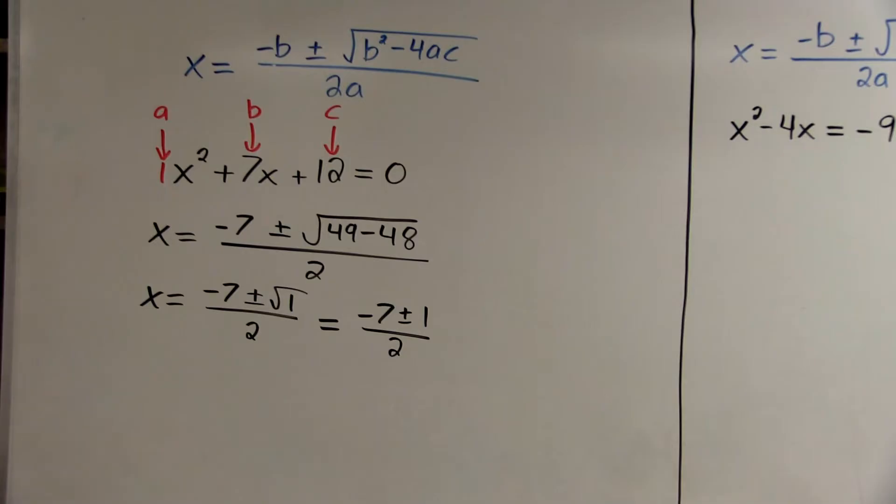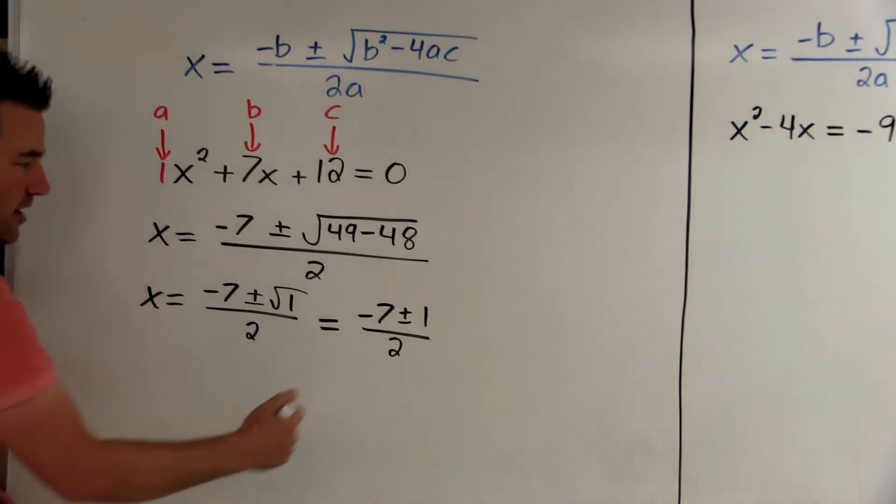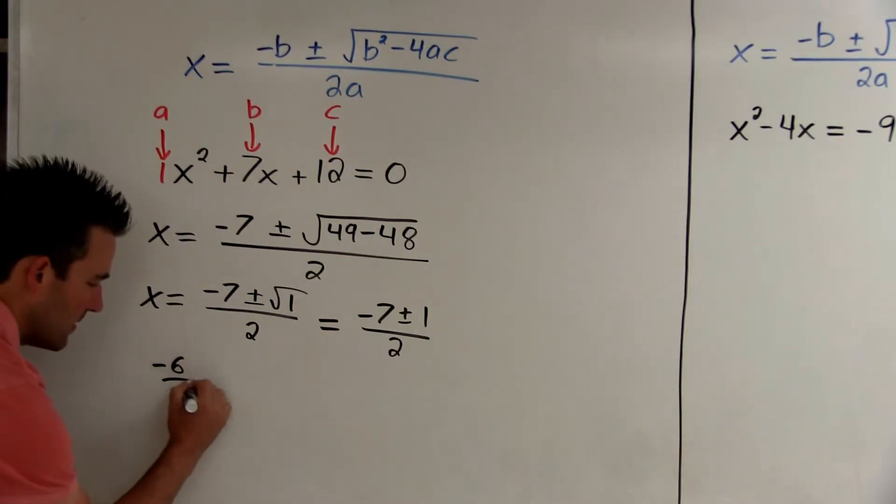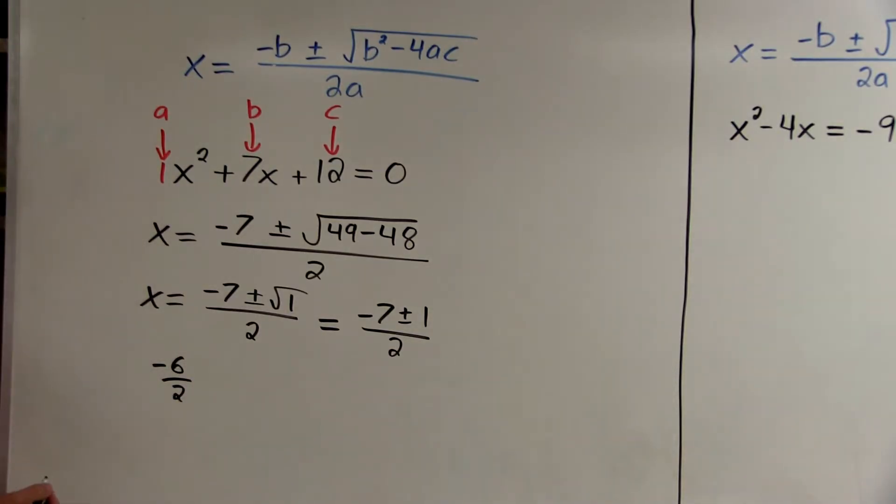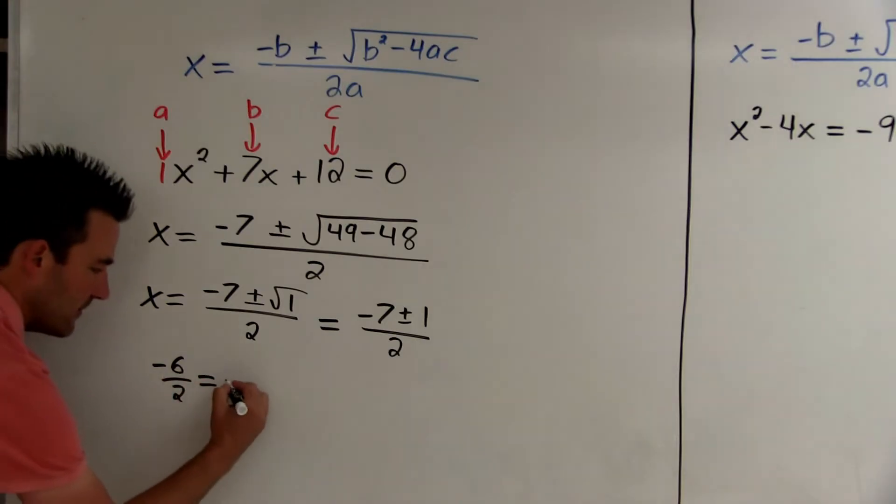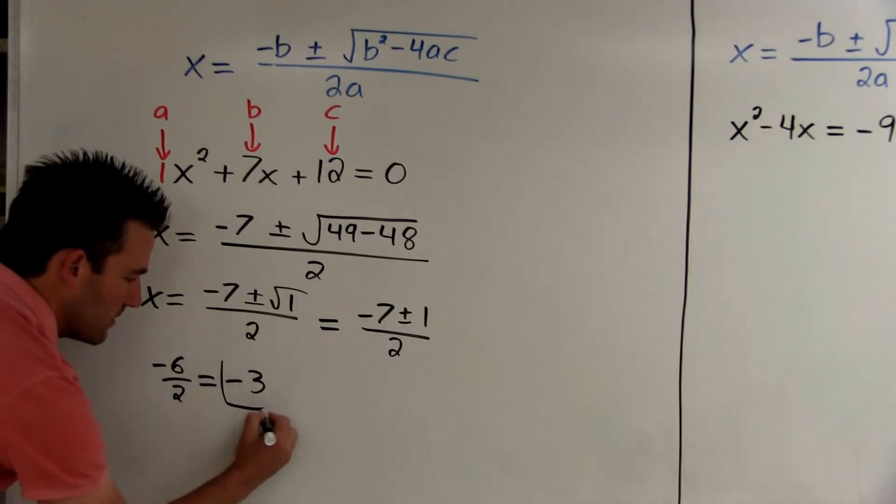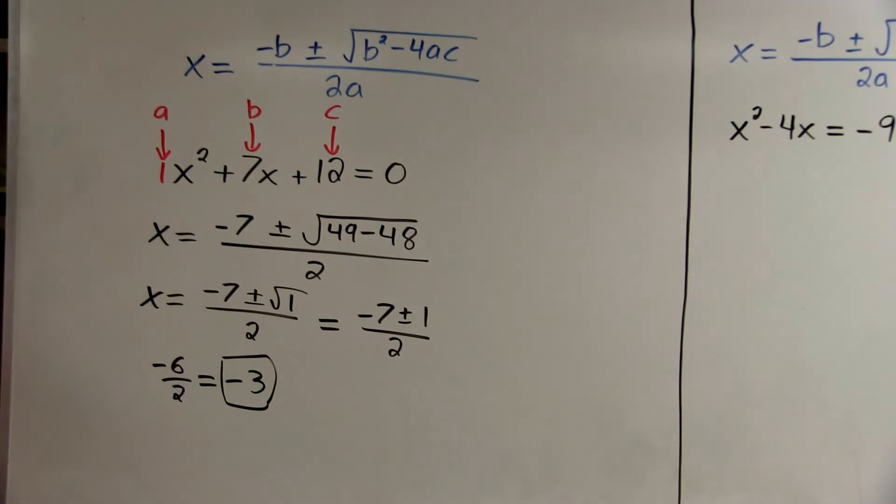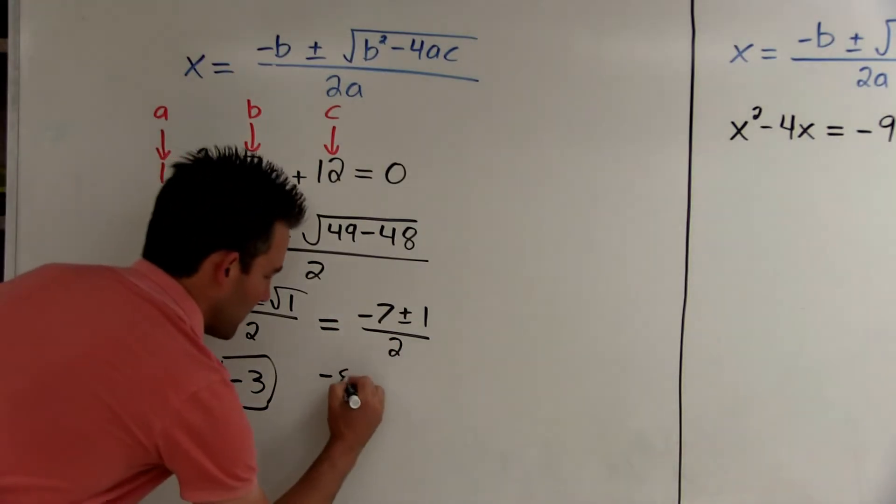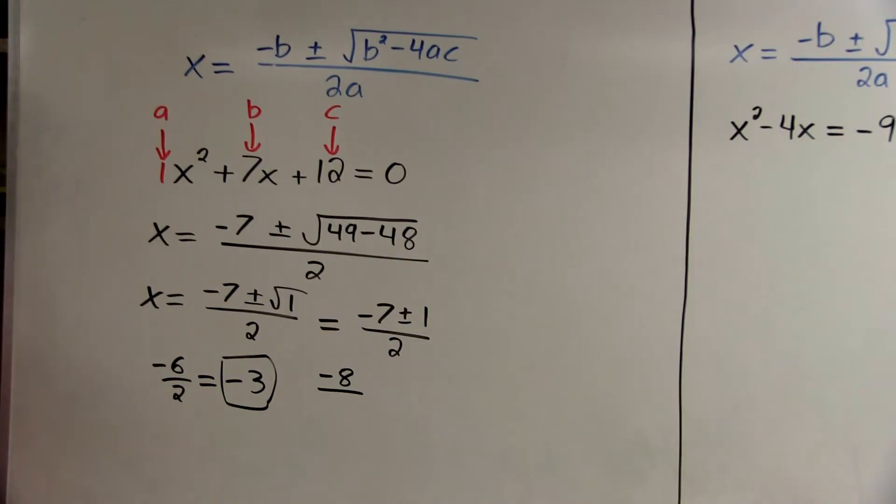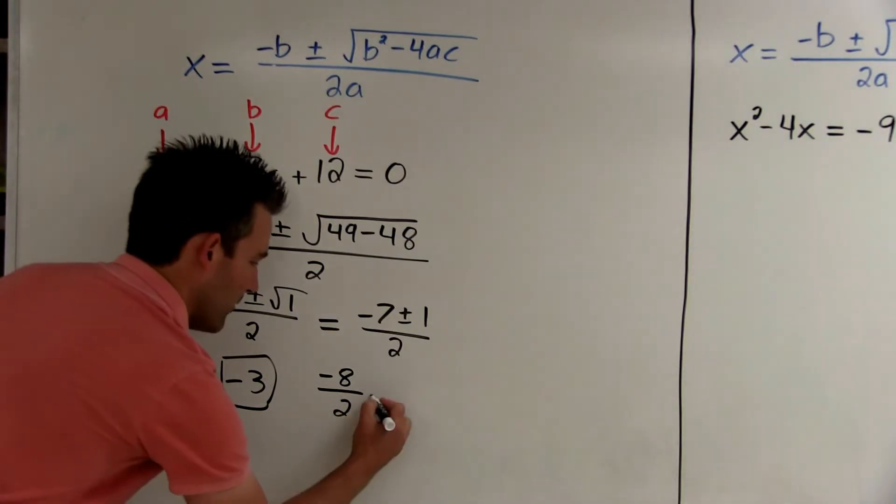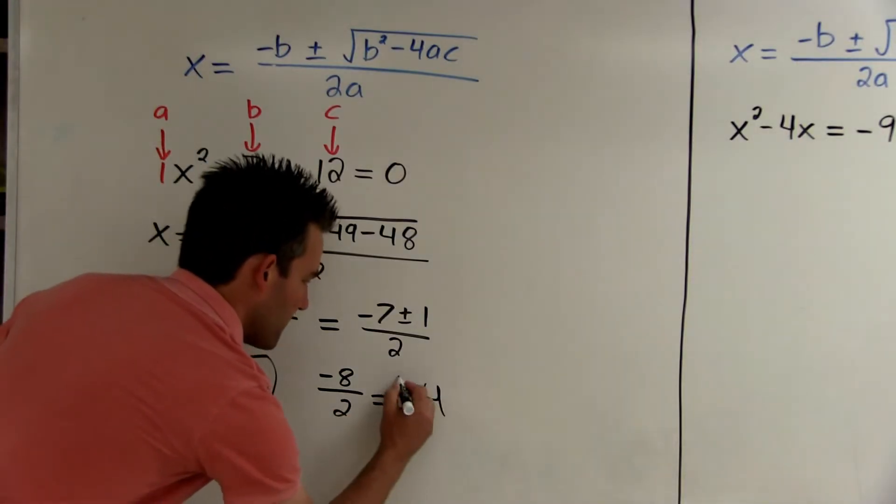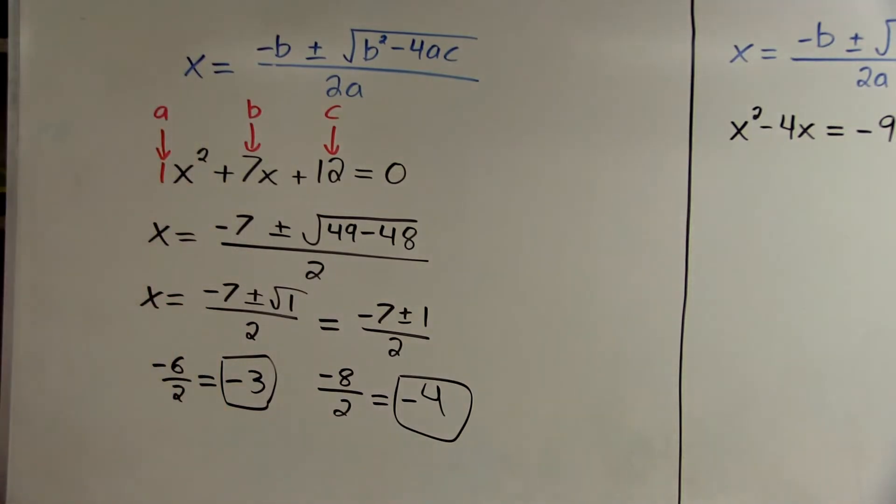Now don't leave your solution like this. Actually plus and minus and figure out what it is. So negative 7 plus 1 would be negative 6, and negative 6 divided by 2 is negative 3. So that's one of our solutions. Negative 7 minus 1 is negative 8, and negative 8 divided by 2 is negative 4. So there's our two solutions.